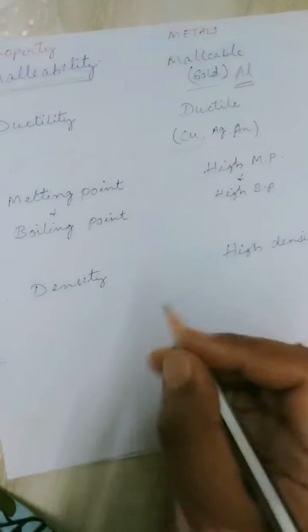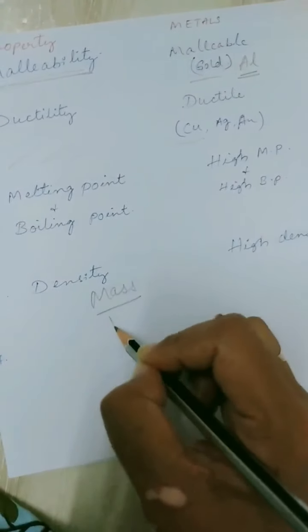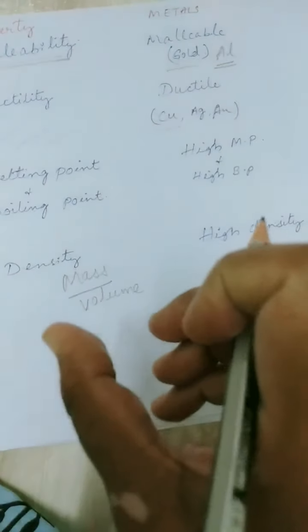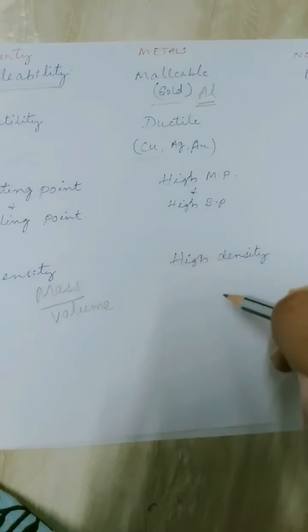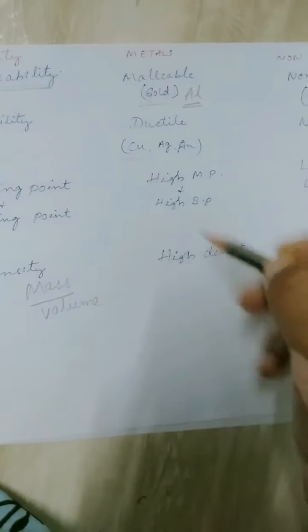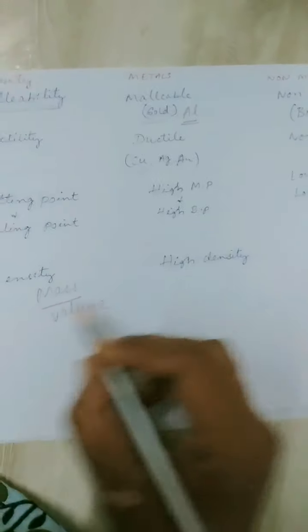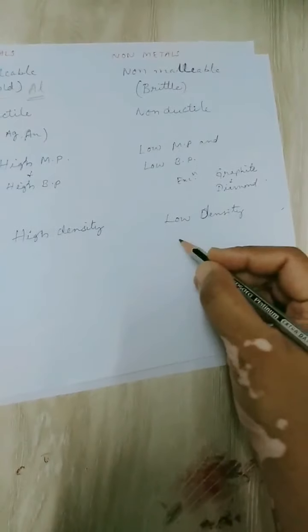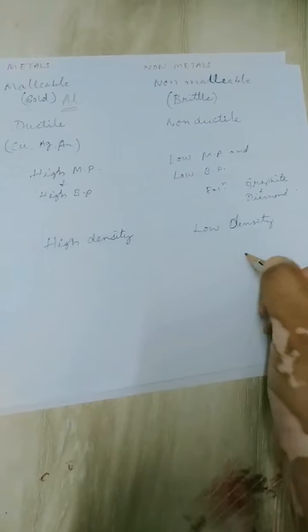Coming to density — it is defined as mass per unit volume, the amount of mass contained in a unit volume. Metals have very high density because the molecules are very tightly packed. Non-metals, when compared to metals, have low density.